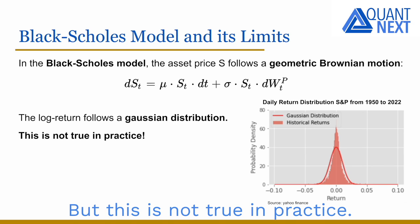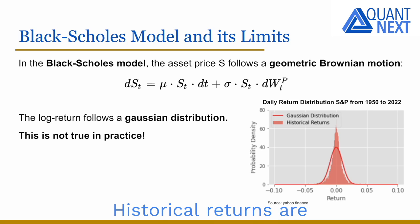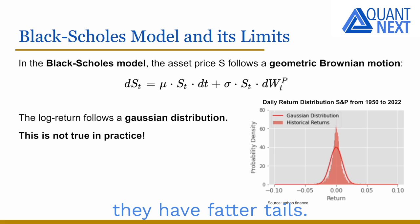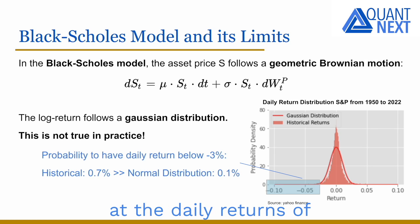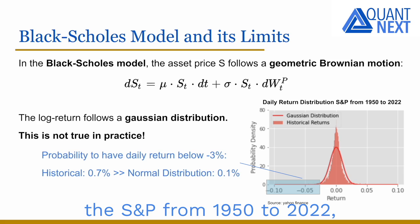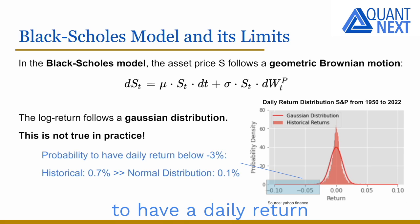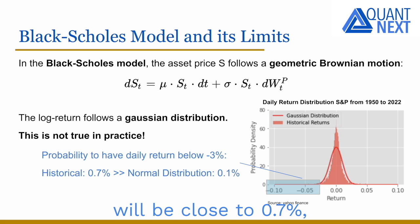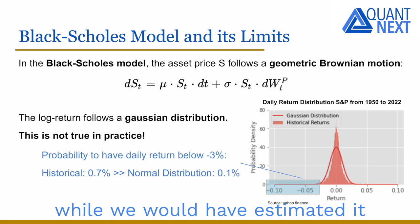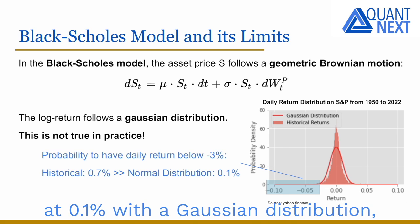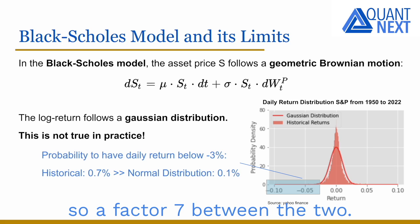But this is not true in practice — historical returns are not normally distributed in general; they have fatter tails. If we look for example at the daily returns of the S&P from 1950 to 2022, the historical probability to have a daily return below minus three percent would be close to 0.7 percent, while we would have estimated it at 0.1 percent with a Gaussian distribution — so a factor seven between the two.